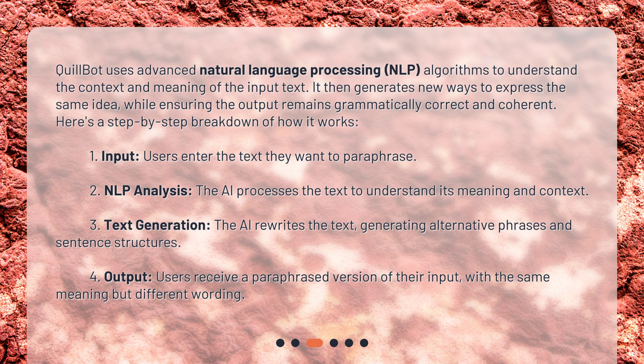Here's a step-by-step breakdown of how it works. Step 1: Input — users enter the text they want to paraphrase. Step 2: NLP analysis — the AI processes the text to understand its meaning and context.